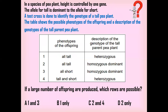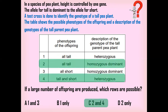We need to determine which rows are correct when a large number of offspring are produced. If all offspring are tall, the genotype of the parent plant is homozygous dominant. If 50% are tall and 50% are short or dwarf, the genotype of the parent plant is heterozygous. Therefore, the correct options are rows 2 and 4. This type of question is likely to appear in exams.